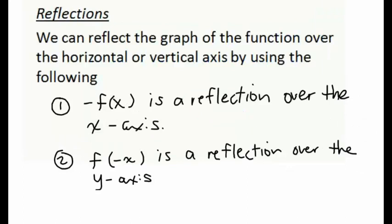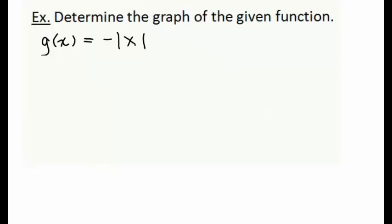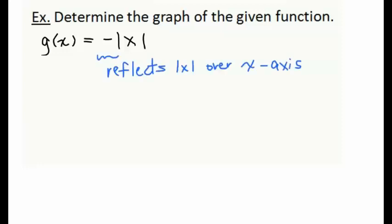The last kind of transformation I want to go over is what are called reflections. We can reflect our function in two major ways. The first is over the x-axis: when we take our original function f(x) and multiply on the outside by -1, this causes a reflection over the x-axis. The second kind of reflection is over the y-axis: when we multiply by -1 on the inside, we get a reflection over the y-axis. Let's graph the function g(x) = -|x|. Because the negative sign is on the outside, we're going to get a reflection over the x-axis.